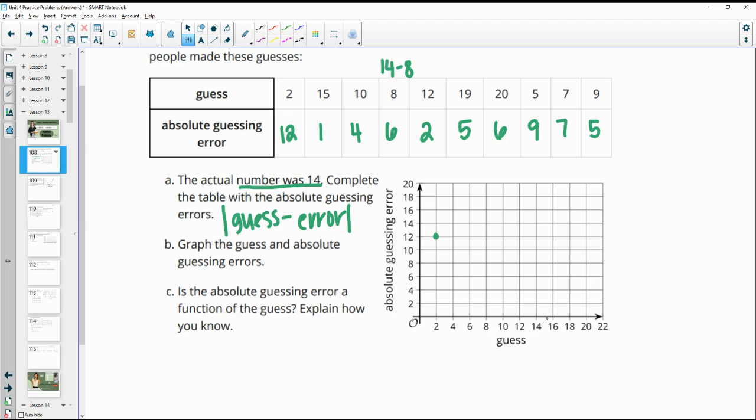So 2 to 12, 15 will be at 1, 10 will be at 4, 8 will be at 6, 12 will be at 2, 19 will be at 5, 20 will be at 6, 5 will be at 9, 7 will be at 7, and then 9 will be at 5.